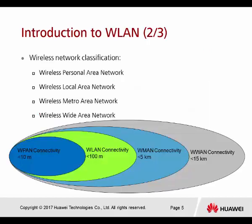For wireless networks, we can classify them into four different types. The first one is WPAN, which stands for Wireless Personal Area Network. This network can only cover up to 10 meters. Technologies used in this area are mostly infrared or Bluetooth.